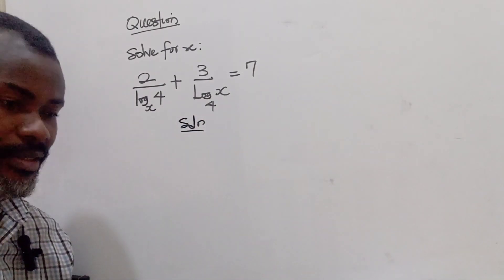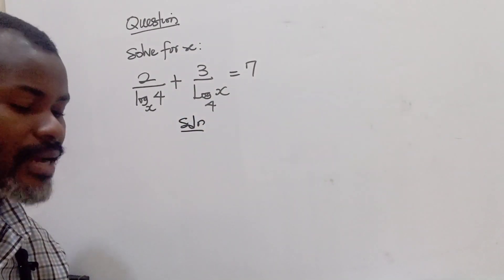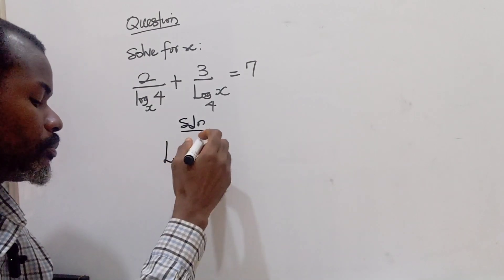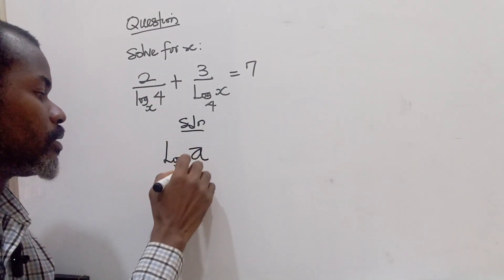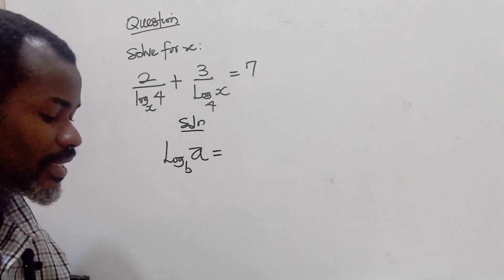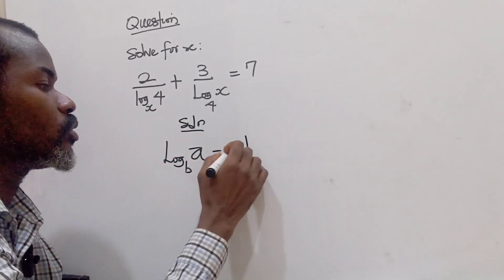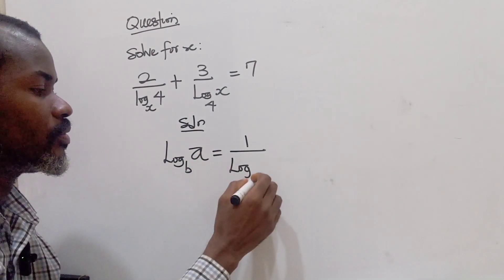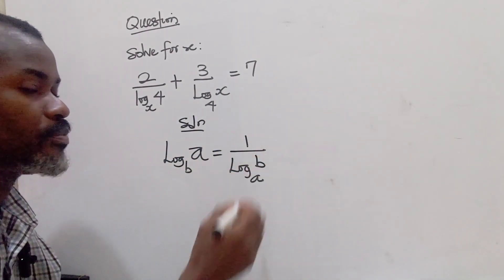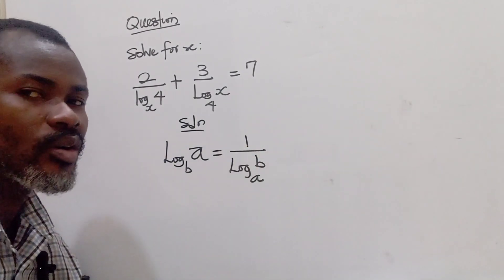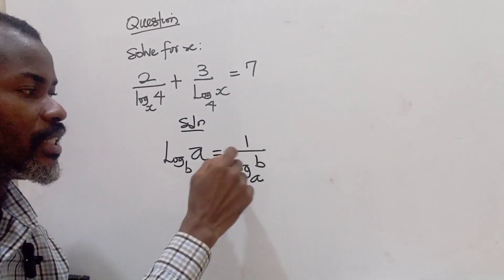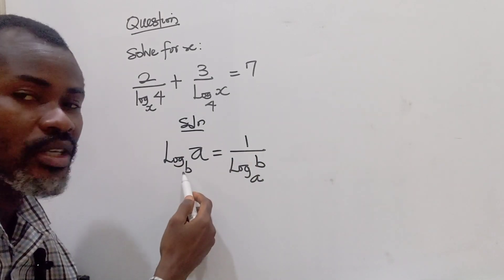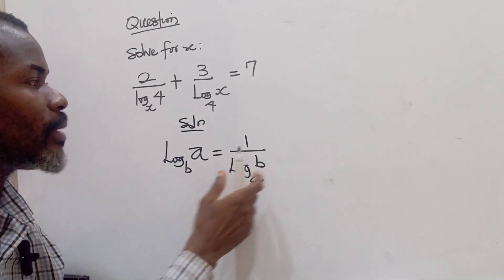The first thing we want to do is simplify, and I'm going to apply a logarithmic law. If I have log a base b, I can write the inverse of this as 1 over log b base a — this is the reciprocal law of logarithms. When you take the inverse, you switch the base and the argument.